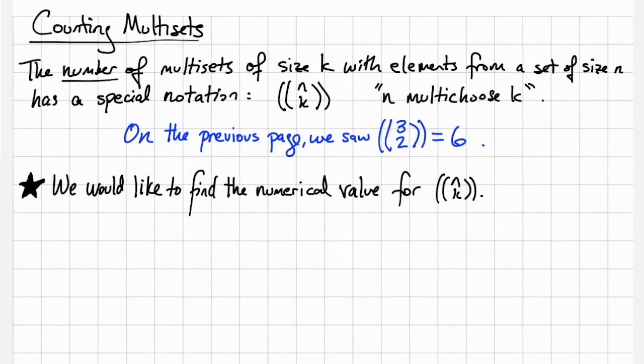We might want to ask how many there are. The number of multisets of size k with elements from a set of size n has a special notation. It looks like a binomial coefficient with an extra pair of parentheses, and we read this as n multi-choose k. For example, we had multisets of size 2 with elements from the set ABC which has size 3, and that set is counted by 3 multi-choose 2, which was 6 different multisets. In the remainder of this video, we'll be talking about how to find a numerical value for n multi-choose k.